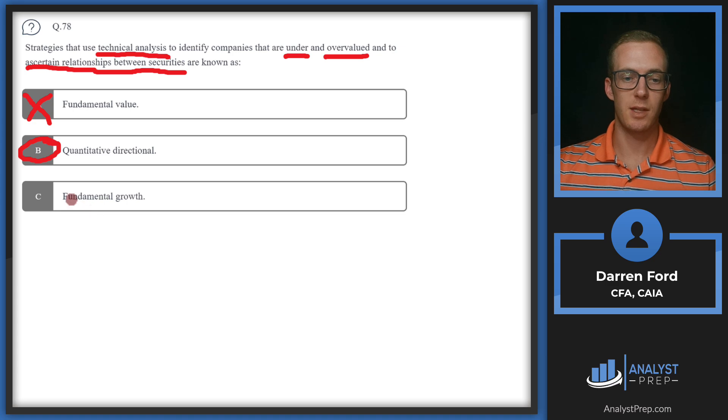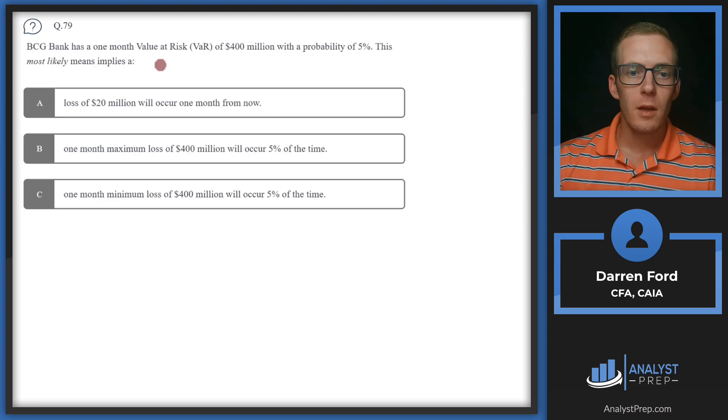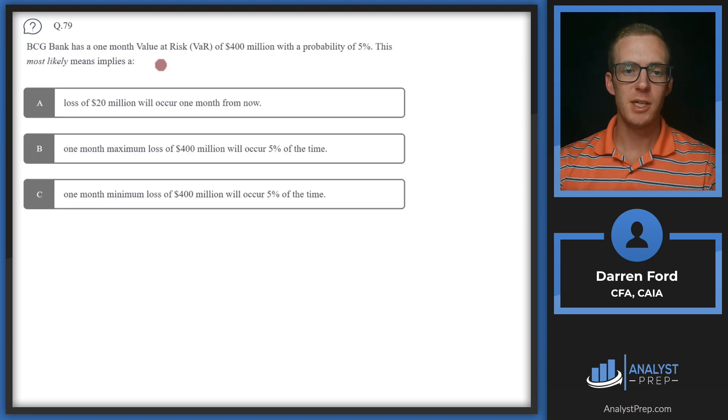C: Fundamental growth. This is picking stocks that we think are going to grow faster than the market or faster than market expectations are giving, and hoping those outperform on that basis. Not really relating to what's being mentioned in the question. So we'll go with B: quantitative directional.